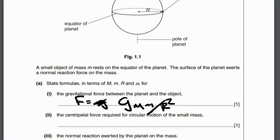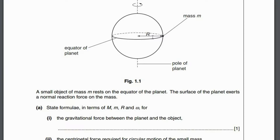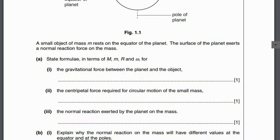The centripetal force required for circular motion of a small mass resting on the equator of the planet — this is going to follow a circular motion where the radius is R. So what would be your equation? It's going to be very simple: F is equal to mRω².